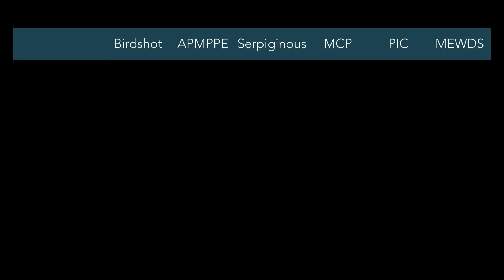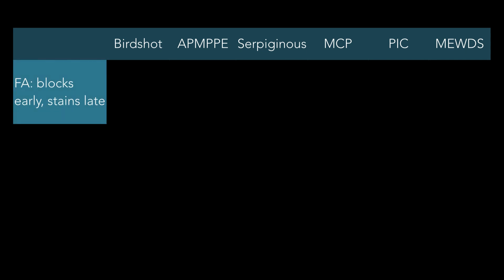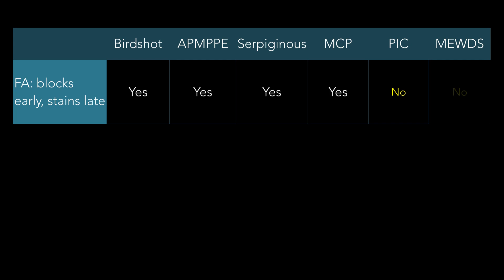Now, this is double jeopardy. Blocks early, stains late — I've primed you for all these. Birdshot, yes or no? Technically yes. So yes, I'm AMPPE. What about serpiginous? Yes. Serpiginous — yes, it is blocks early, stains late. What else did I say about it? If you have CNV, that's going to be different. There are two that classically are not blocks early, stains late — so MCP is blocks early, stains late, which leaves us with MUDES and PIC that do not block early, stain late.